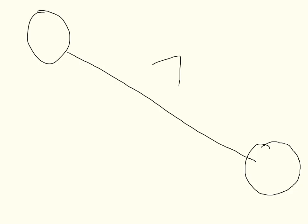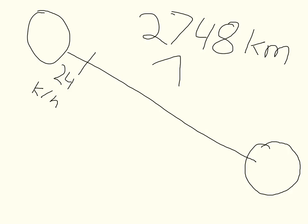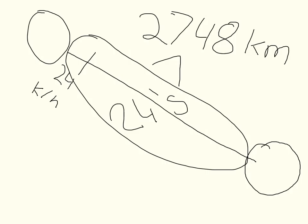Here we have the two cities and this is the distance. This is 2,748 kilometers and they can drive 24 kilometers per hour. So, we are trying to figure out how many 24s are in 2,748.